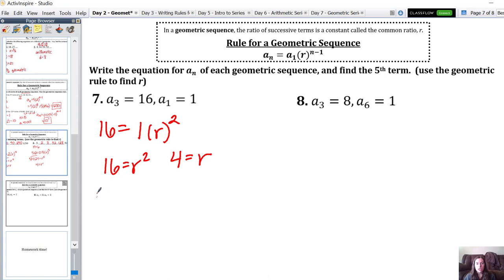So our equation in general would be a sub n equals 1 times 4 to the n minus 1, which you could also just write as 4 to the n minus 1, because 1 times that wouldn't change it. So now for a sub 5, we need 4 to the power of 5 minus 1, which is 4 to the 4th, which is 256.